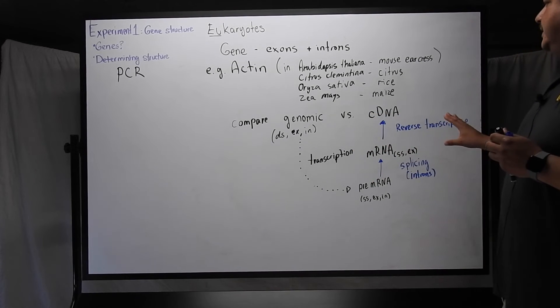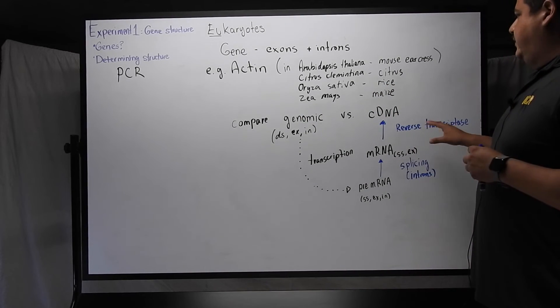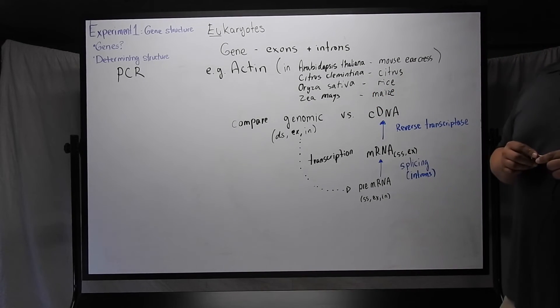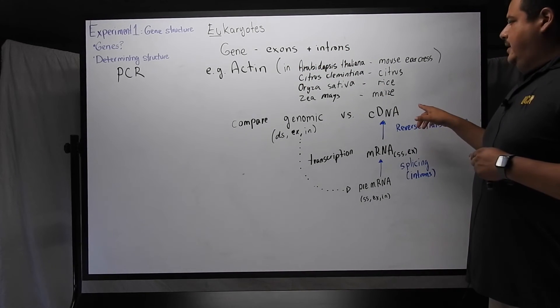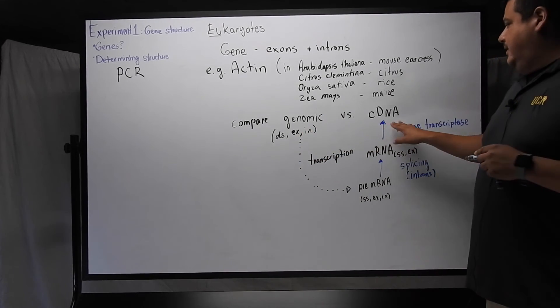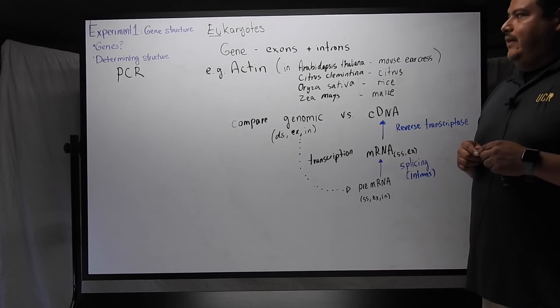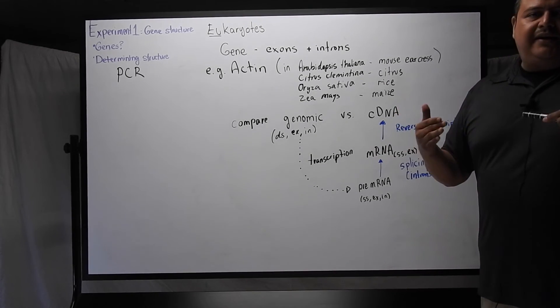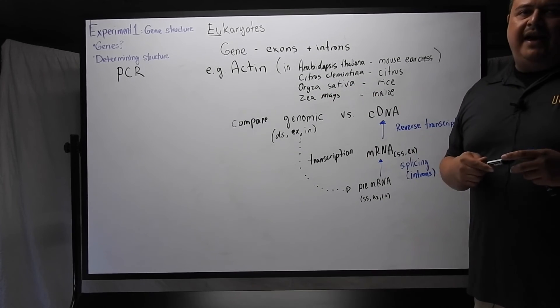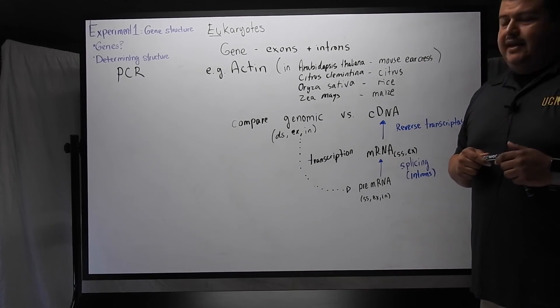So again, just to recap, the reason we're comparing genomic DNA to cDNA in this experiment is so that we can have two template molecules that are available to be amplified through PCR, but only one of them has the exons and the introns, whereas the other one only has the coding information. So by this comparison, we're able to figure out how they differ and then construct a visual representation of our gene. And in this case, it's the actin gene.